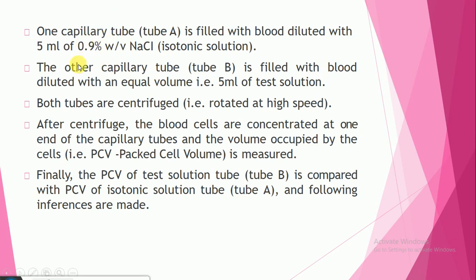The other capillary tube, tube B, is also filled with blood and diluted with an equal volume as the standard — for example, 5 ml — but of the test solution. So tube A contains the isotonic reference solution and tube B contains your test solution.